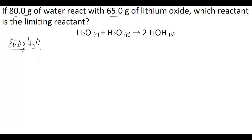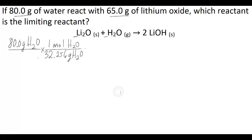First, you need to get the water into moles. If you look up the molar mass of water using the atomic masses of hydrogen and oxygen from the periodic table, you find 32.256 grams of water per one mole of water. Then, using the reaction stoichiometry to relate moles of water to moles of lithium oxide, you see the ratio is one to one. If there's no stoichiometric coefficient in front of a reactant or product, it's implied that there's one mole of that species.